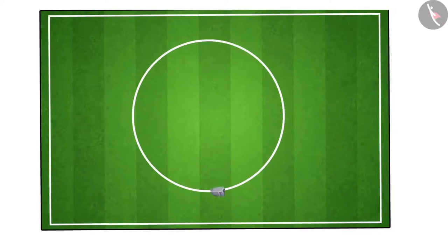Now, let us understand what was happening. Before the thread is released, the stone revolves in a circular path with a certain speed. The stone changes direction at every point.